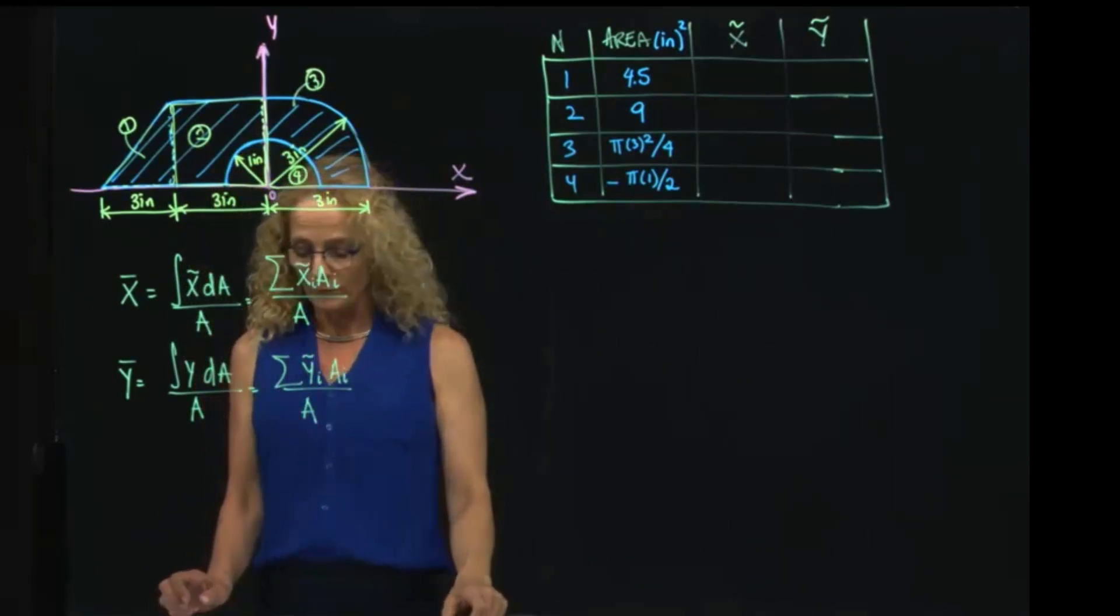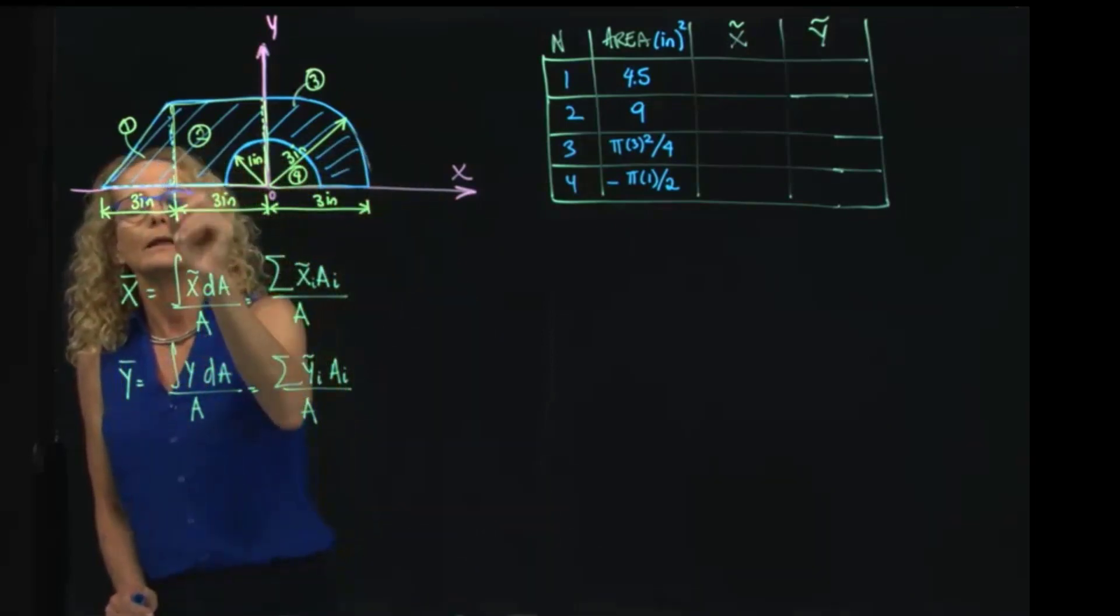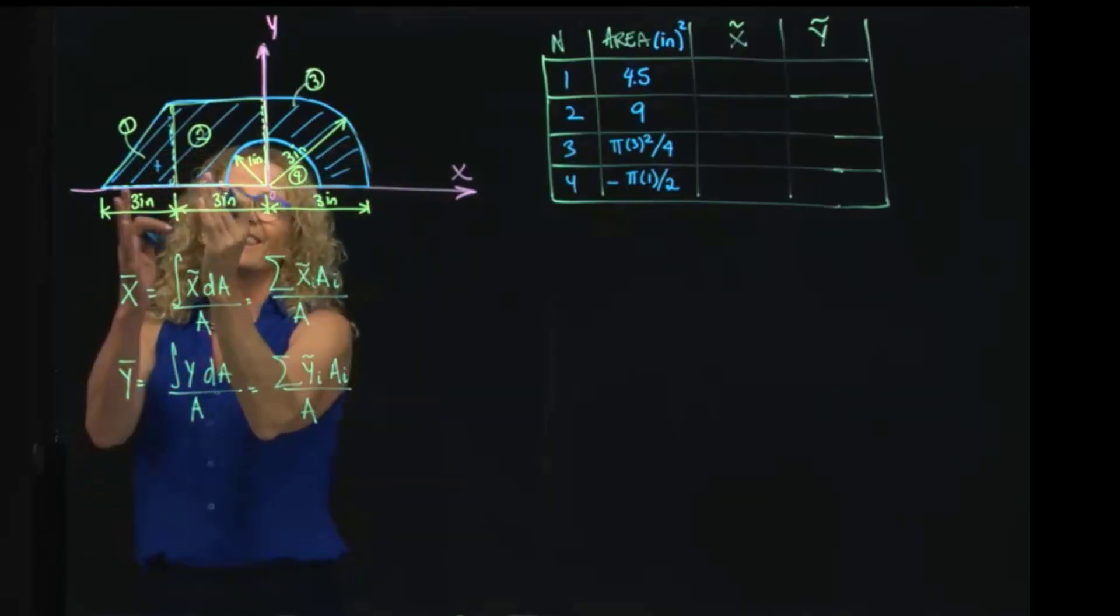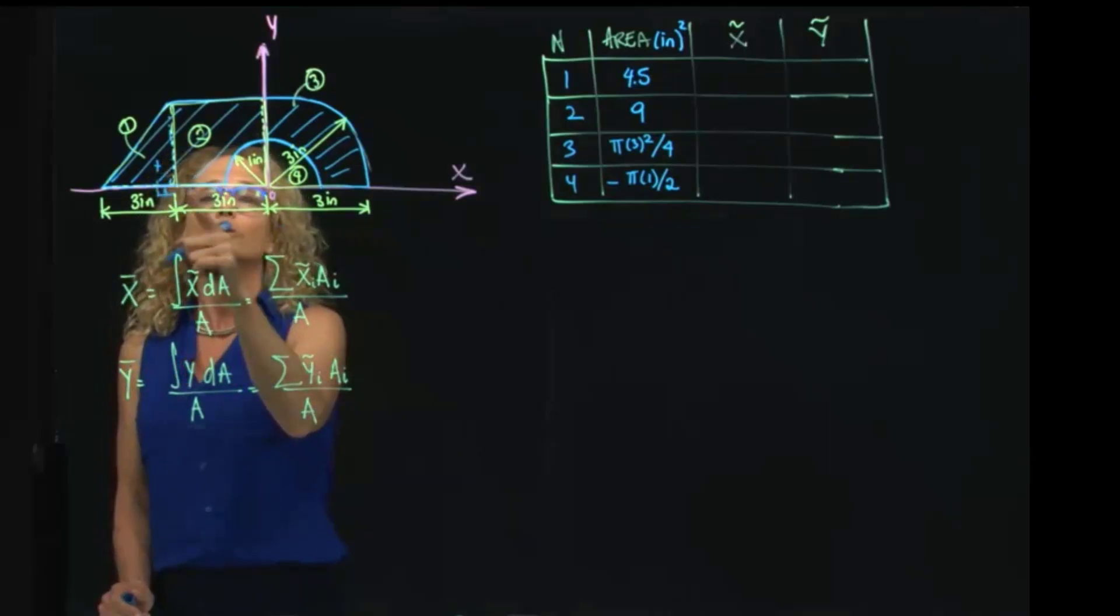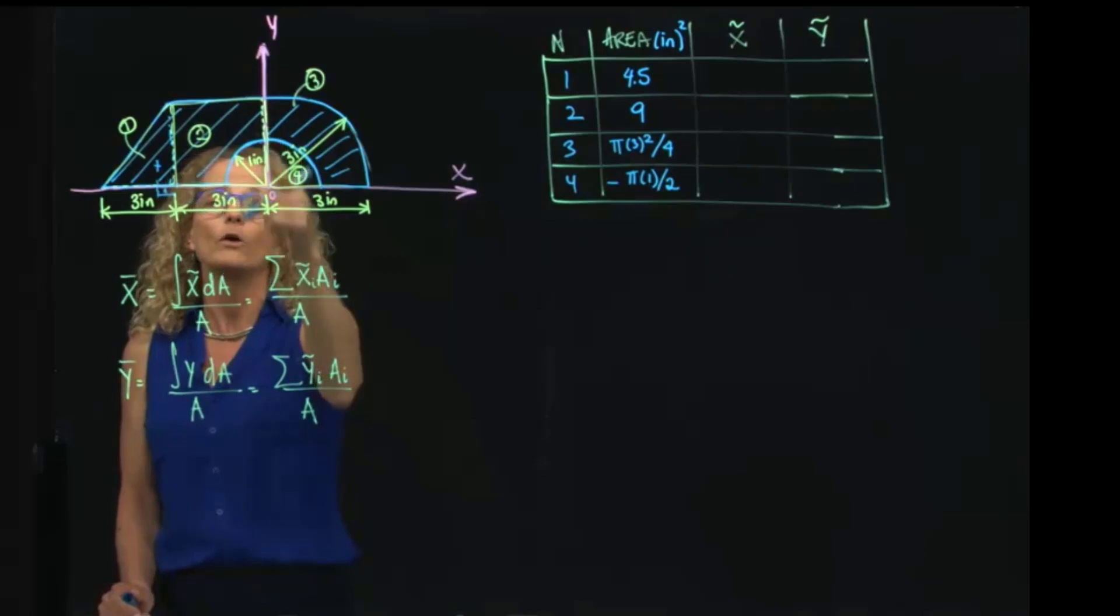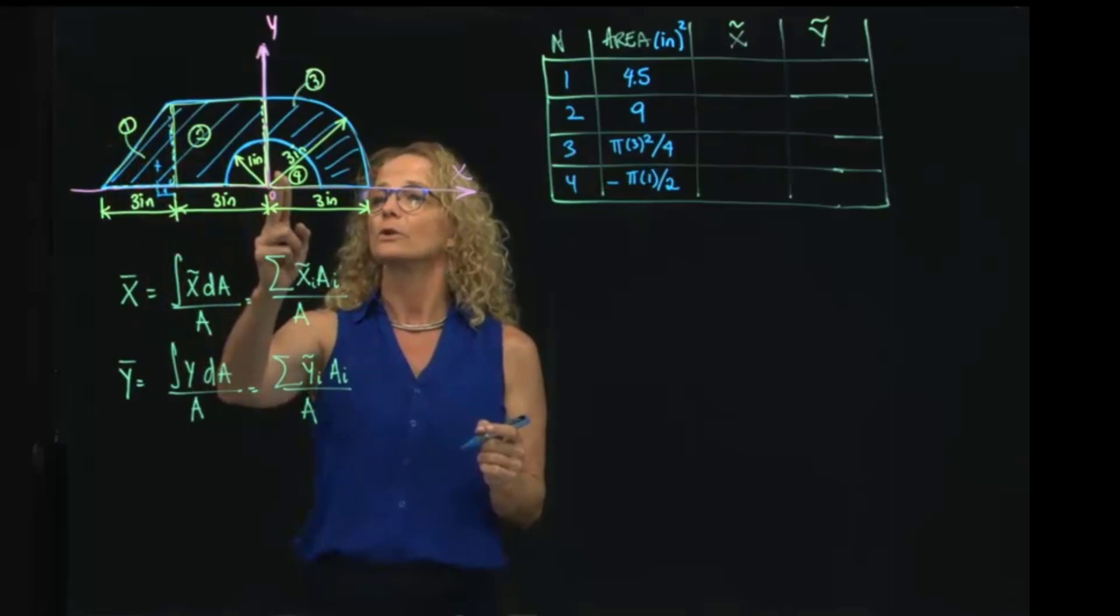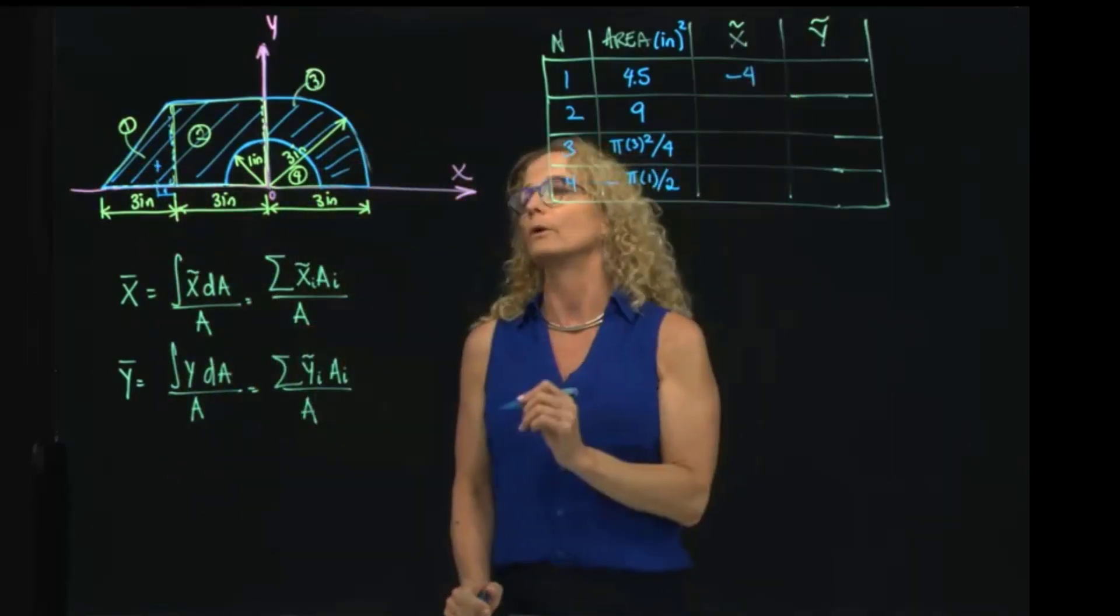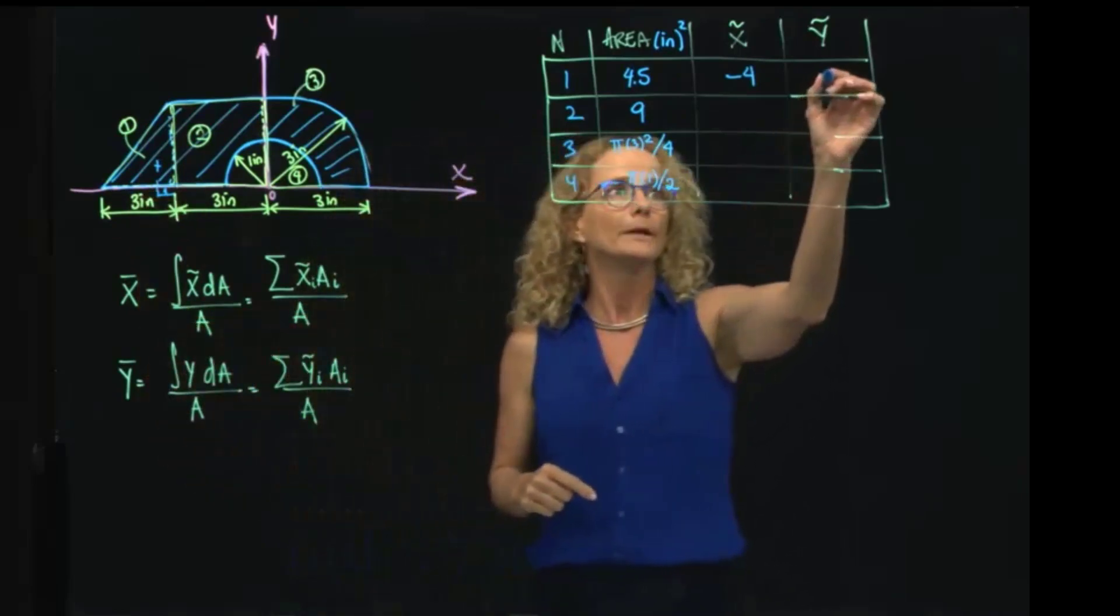When we want to find where the x is located, we know that the location of the centroid for our triangle is one third of the thick side, right? So that will be 1 inch from here, but I have to add those 3 because I have to measure it from my origin. So when I see where the centroid for x is located, it will be located at negative 4. My y will be located at 1 because it's also one third of the height, and the height is 3.